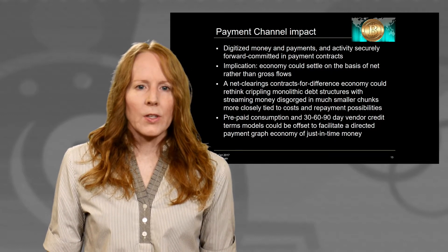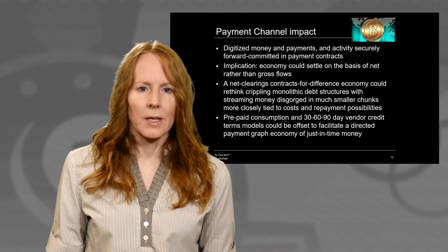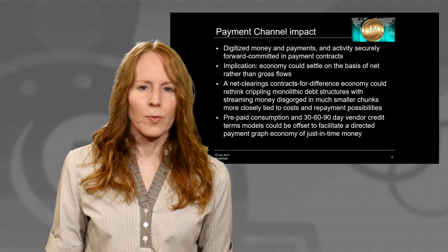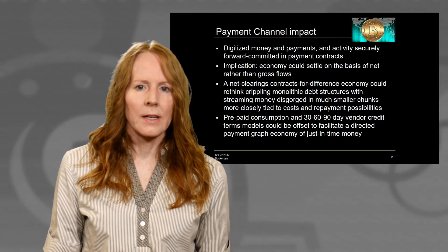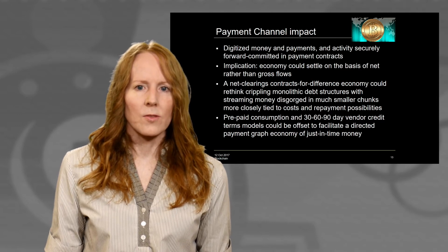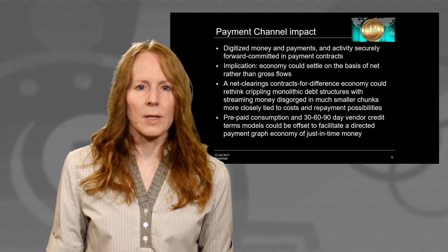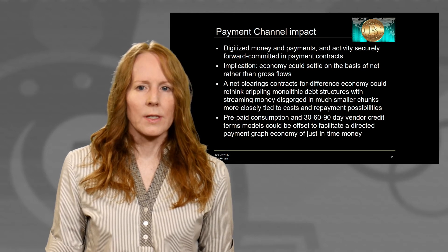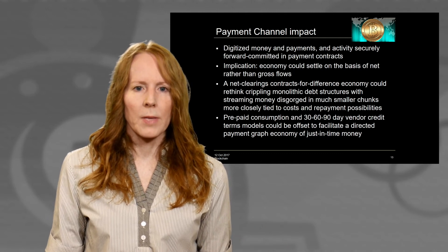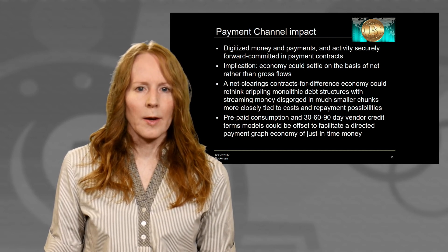If we think about how the payment channel concept might play out on a wider basis in the economy, it's really quite startling. We could have digitalized money and payments and activity securely forward-committed in payment contracts. The implication is that the economy could settle on the basis of net rather than gross flows. A net clearing contracts-for-difference economy could rethink crippling monolithic debt structures, with streaming money disgorged in much smaller chunks more closely tied to costs and repayment possibilities. Prepaid consumption and 30/60/90-day vendor terms could be offset to facilitate a directed payment graph economy of just-in-time money.